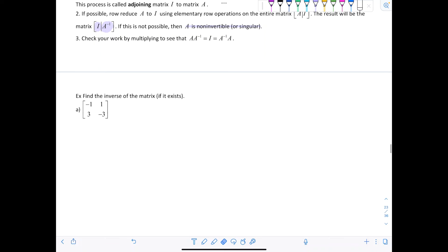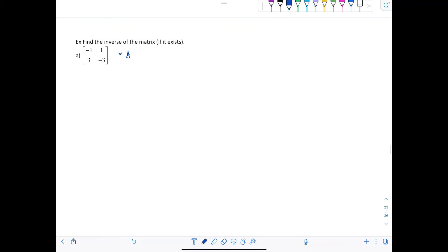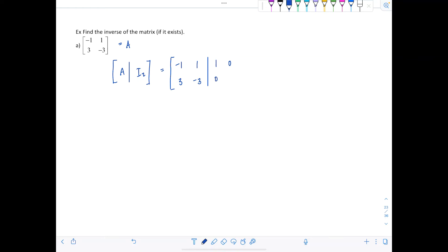Find the inverse of the matrix if it exists. So we have a two by two matrix here. I'm going to call this matrix A. What you do is you start off by adjoining matrix A with the identity matrix of order two. So you're going to write this jumbo matrix. We've got negative one, one, three, negative three. And then you put the identity matrix of order two, one, zero, zero, one. Now don't really pay attention to the identity matrix here. Your goal is just to focus on transforming matrix A into the identity matrix.